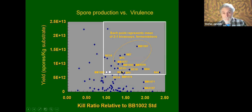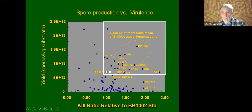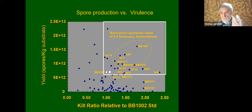That means we can use many more spores in the field to get efficacy, but the economics are still okay. In screening the fungi, we look at yield versus virulence. The ideal is a strain that is fairly virulent but also producing lots of spores — like BB 1067. This one up here produces spores like GHA but actually produces twice as many spores with the same virulence as GHA, which means the unit cost of spores is half as expensive.